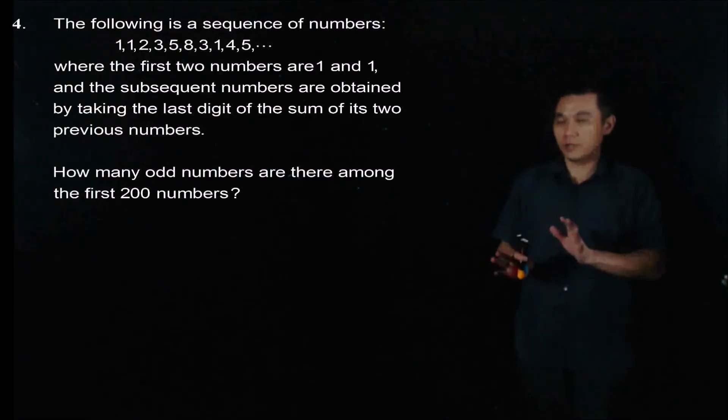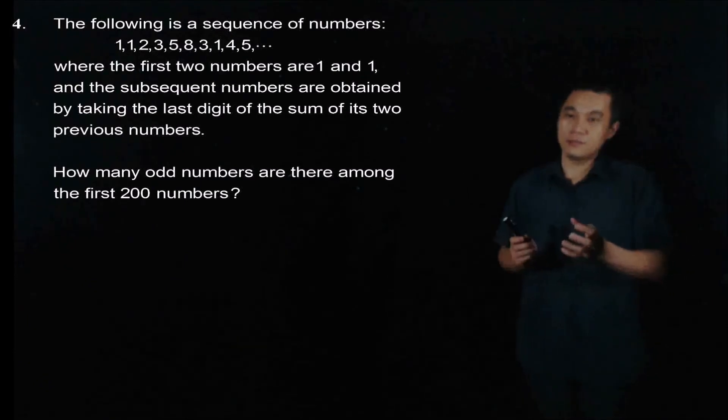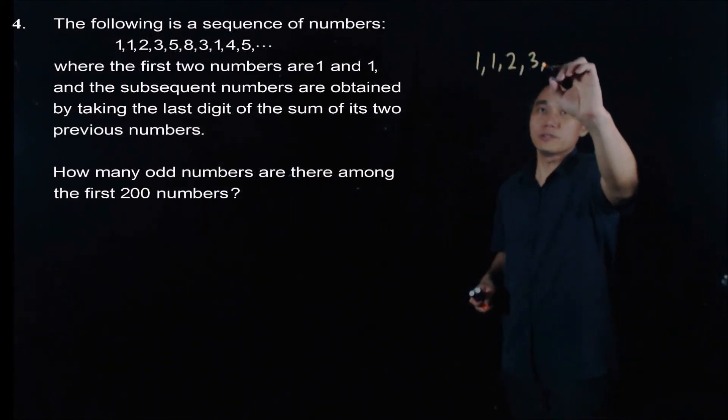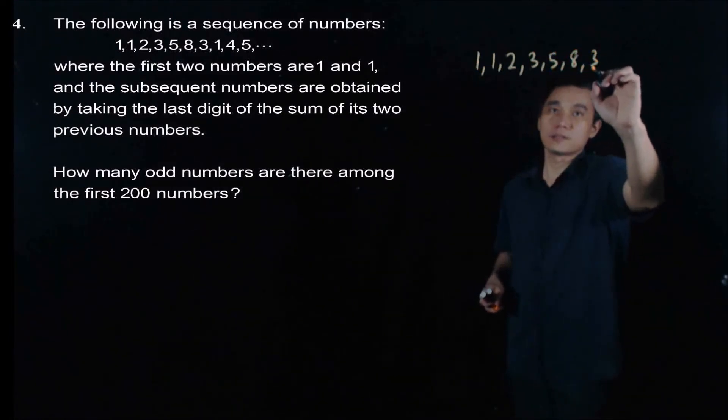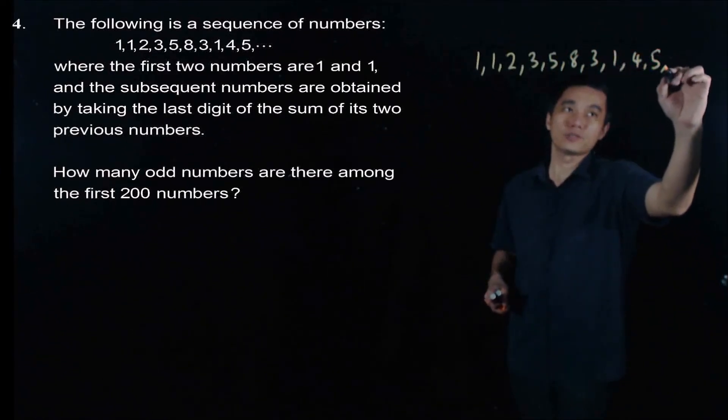So we need to observe the pattern. So what we have is that for a whole number is either odd or even. For this sequence, it starts with 1, 1, 2, 3, 5, 8, 13, but we write 3, and 1, 4, 5, and so on and so forth.